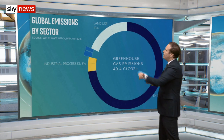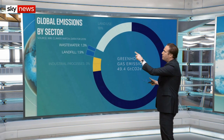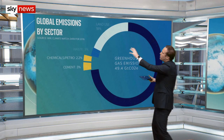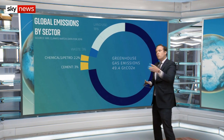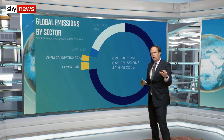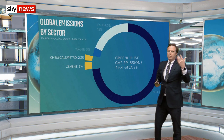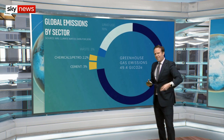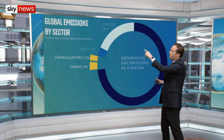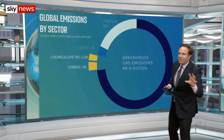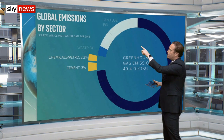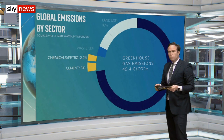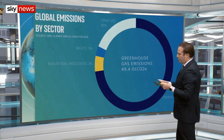Looking at waste — landfill, wastewater emissions, various greenhouse gases — and now chemical processes. What we have here are the direct emissions caused from various processes. For instance, the creation of cement involves burning in a kiln and a chemical reaction with limestone that releases carbon dioxide. So a lot of CO2 comes from the chemical process of cement, but there are also energy costs we'll come to. Chemicals and petrochemicals are about 2.2%, and cement is about 3%. It all starts to add up.